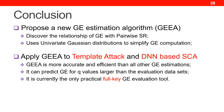In conclusion, we propose a new GE estimation algorithm based on the theoretical distribution of ranking score vectors. We discover the relationship of GE with pairwise success rates and use the sum of univariate Gaussian probabilities to estimate GE. In real implementation, we apply GEA to both traditional template attacks and DNN-based side-channel attacks, giving the only practical full-key GE evaluation tool. Results show that GEA is much more accurate and efficient than all current GE estimations, and it can predict GE for sizes larger than the size of the experimental datasets.